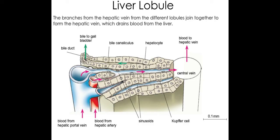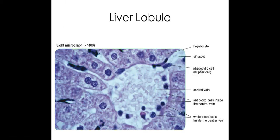Here is another diagram showing the differences between the different vessels involved and the direction of flow. The bile will flow into the bile duct and then be carried to the gallbladder, where it is stored until it's needed by the body.